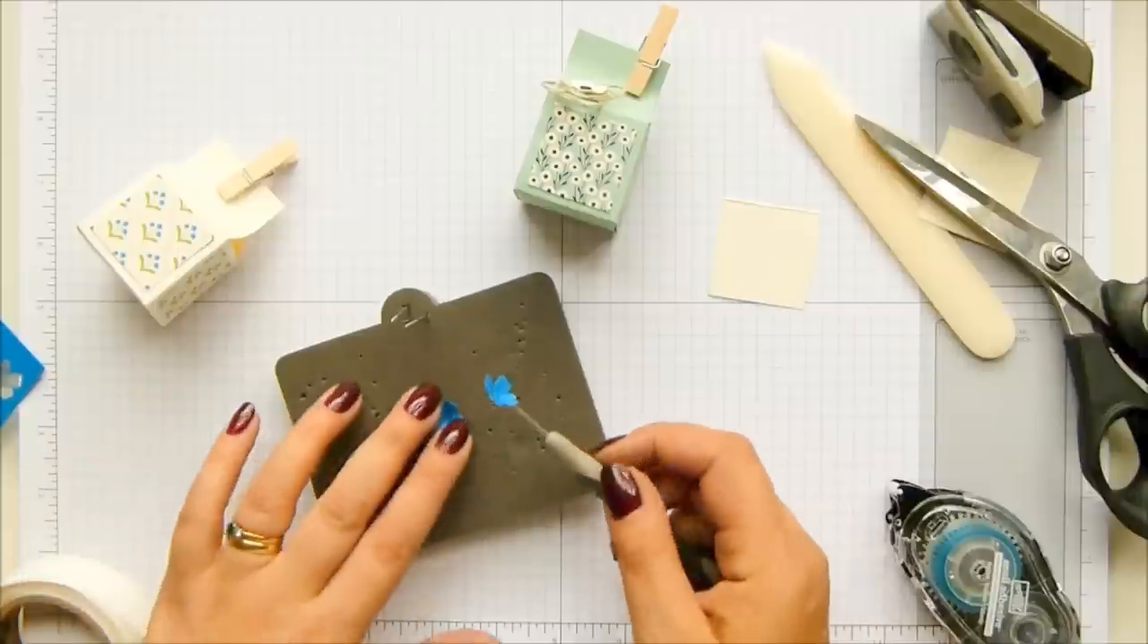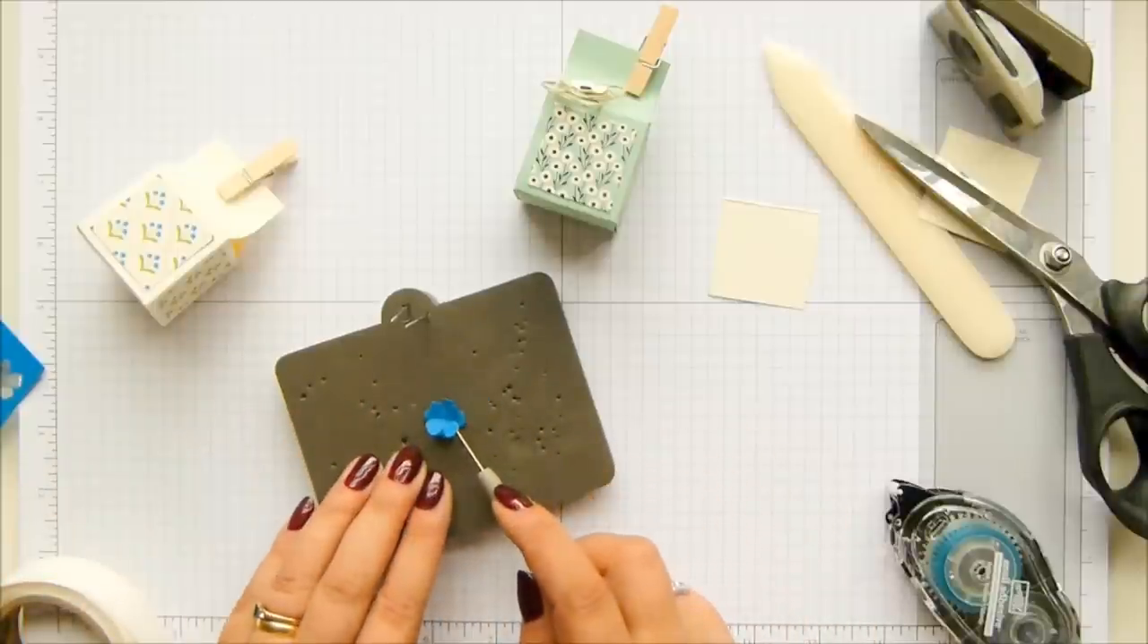So we're going to pick that up with a glue dot and put it inside the other, but offset ever so slightly. And just kind of re-squish in the middle.